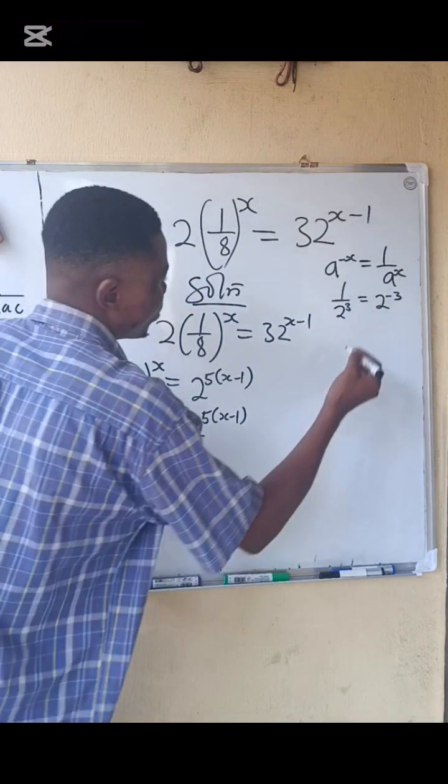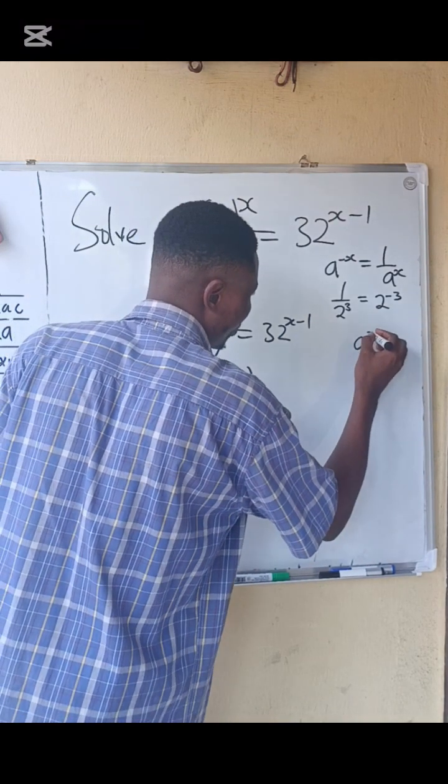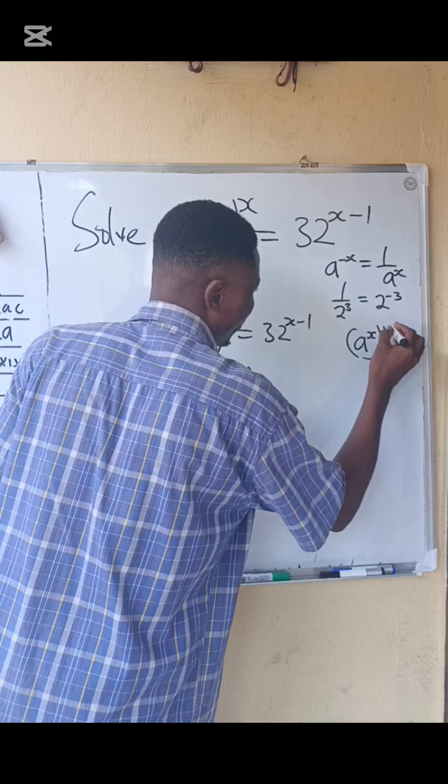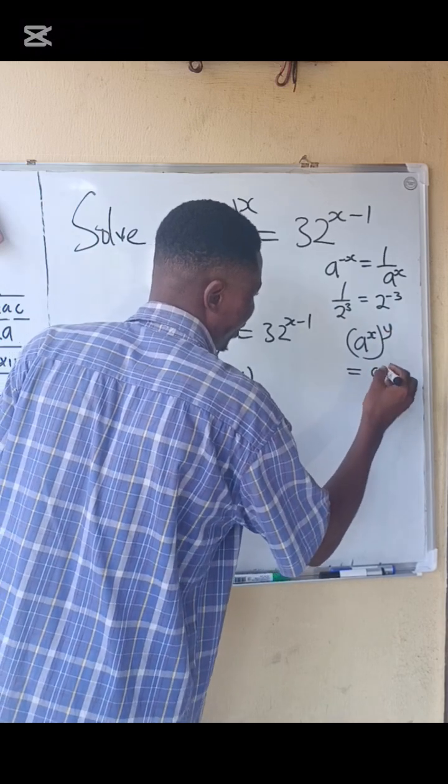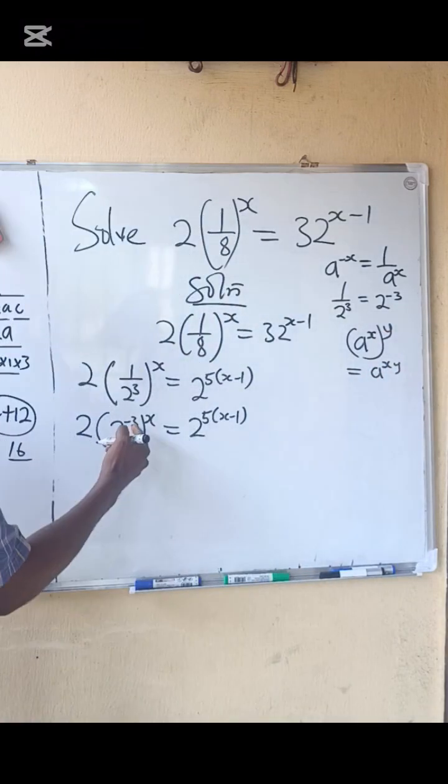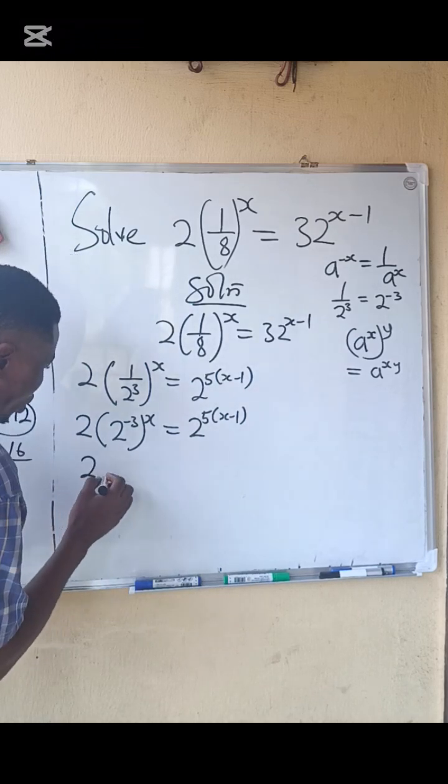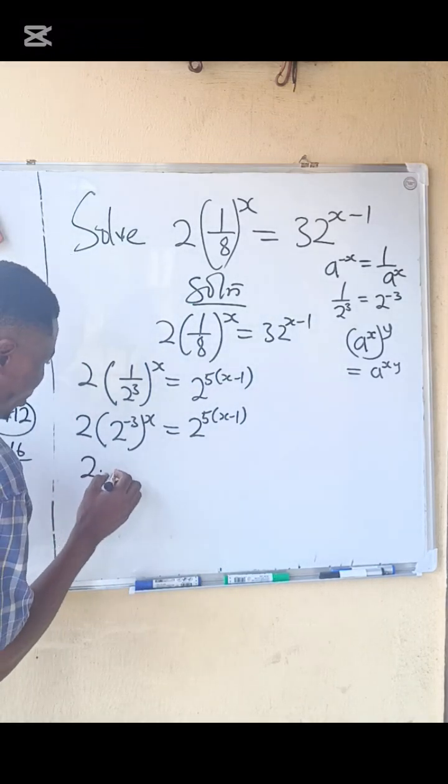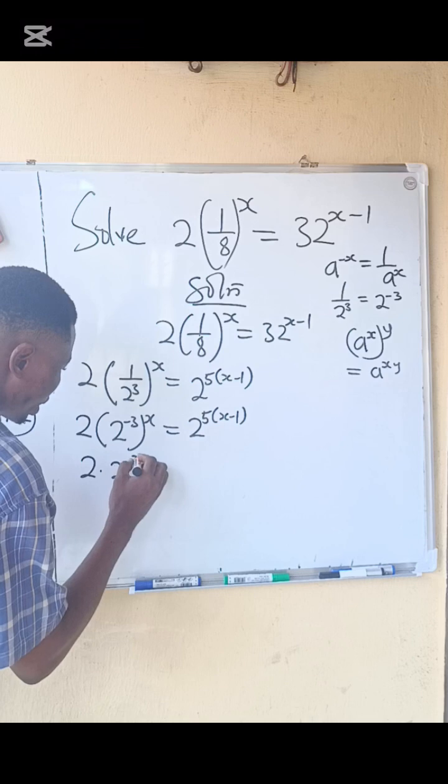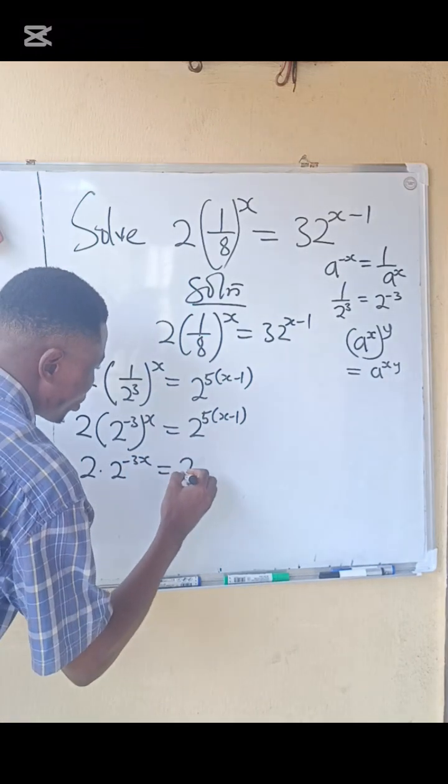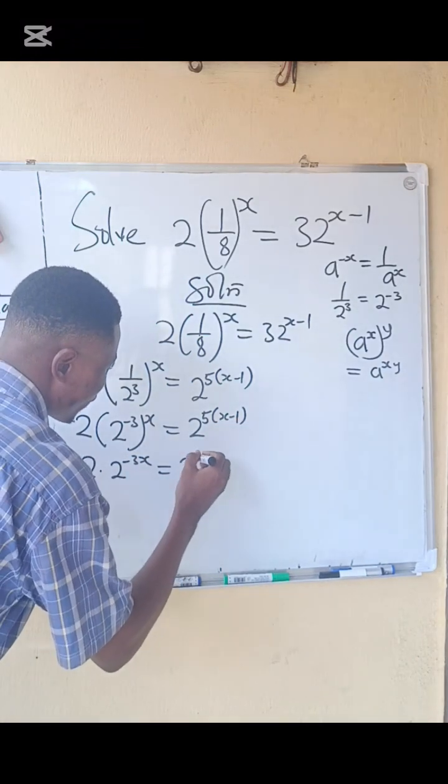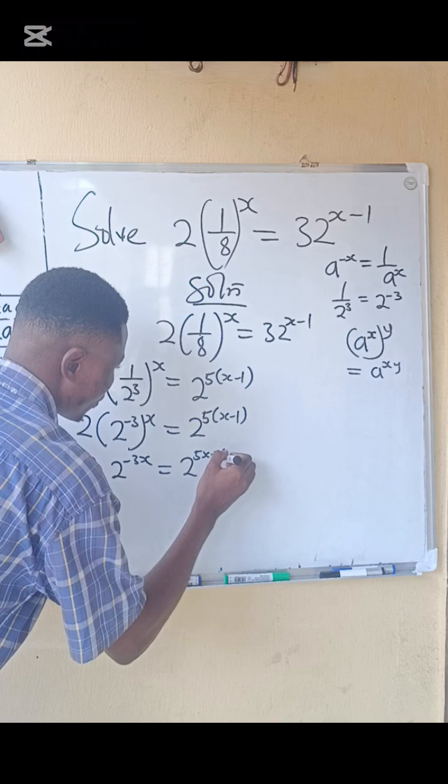This is what we call the power law. For example, if we have a raised to power of x raised to the power of y, the answer is going to be a power xy. So the same thing is going to happen here. We now have that 2 multiplied by 2 power minus 3x equals to 2 power, let me just open this bracket, 5x minus 5.